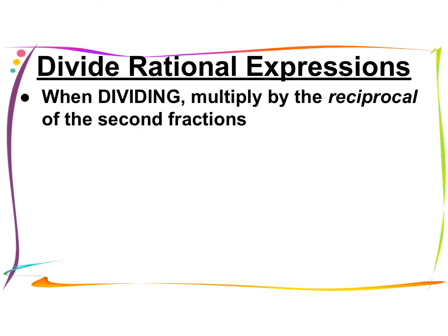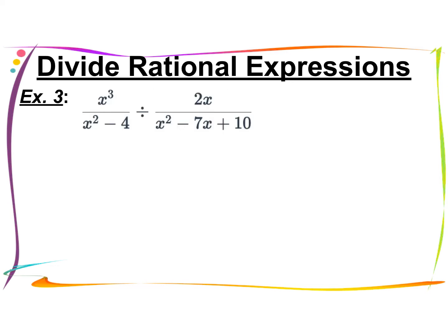Now, dividing. When we divide rational expressions, we multiply by the reciprocal of the second fraction — always the second fraction. So it's going to look very similar to multiplication and become multiplication. I'll keep the first fraction the same and factor it along the way: we have x cubed in the numerator, and a difference of two squares in the denominator — that's x plus 2 times x minus 2. Since it's division, I take the reciprocal of the second fraction and factor along the way, so it becomes multiplication.